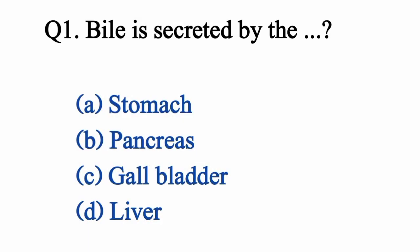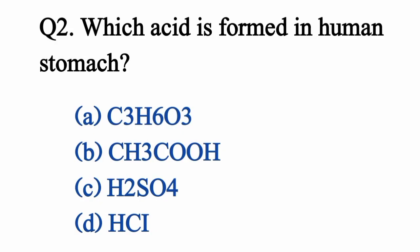Question 1: Bile is secreted by the... Correct option D: Liver. Question 2: Which acid is formed in human stomach? Correct option D: HCl.